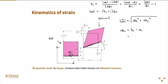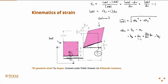So AB_x is B_x minus A_x. To get to point B, we have the displacement U of x, plus the original length dx, plus this distance defined as partial U_x over partial x times dx. The point A_x is just minus U of x, so the U's cancel, and we're left with dx plus partial U_x over partial x times dx. Likewise for AB_y: B_y minus A_y equals U_y plus partial U_y over partial x times dx, minus U_y. The U_y's cancel.